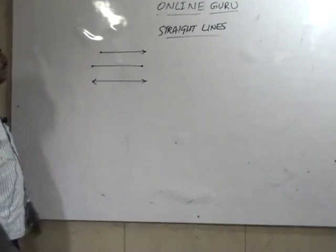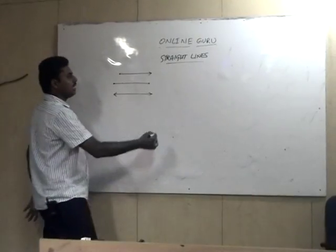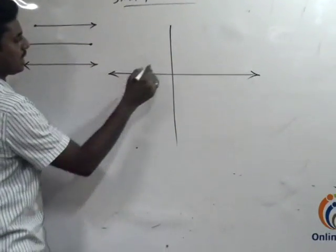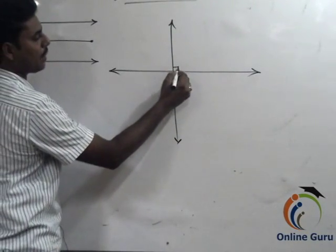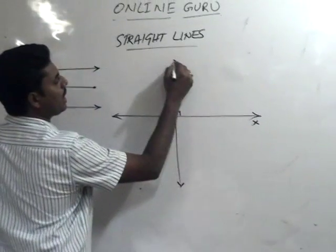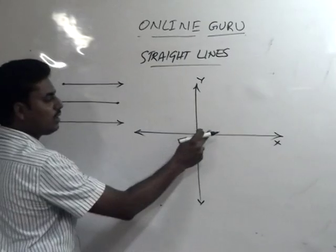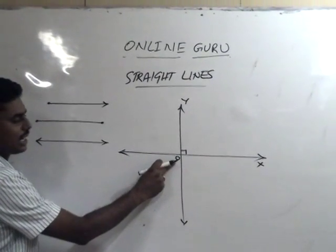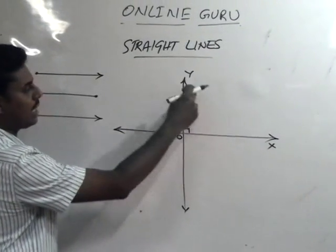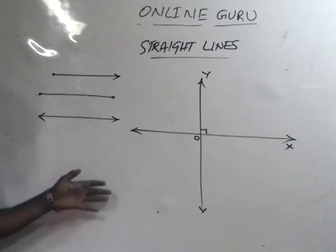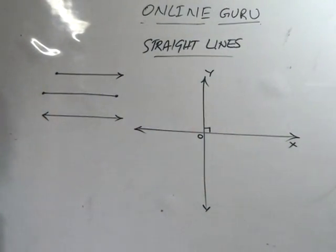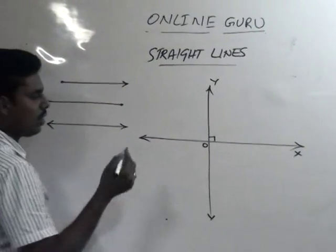This blackboard can be treated as a plane. In this plane we take two mutually perpendicular lines intersecting at a point O. Generally one line is taken as the x-axis, which is called the horizontal line, and the other as the y-axis, which is called the vertical line. Any line parallel to the x-axis is horizontal, and any line parallel to the y-axis is vertical.